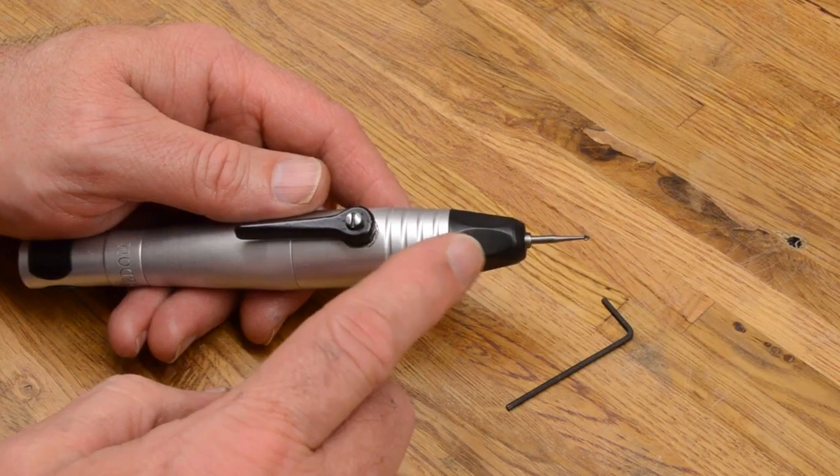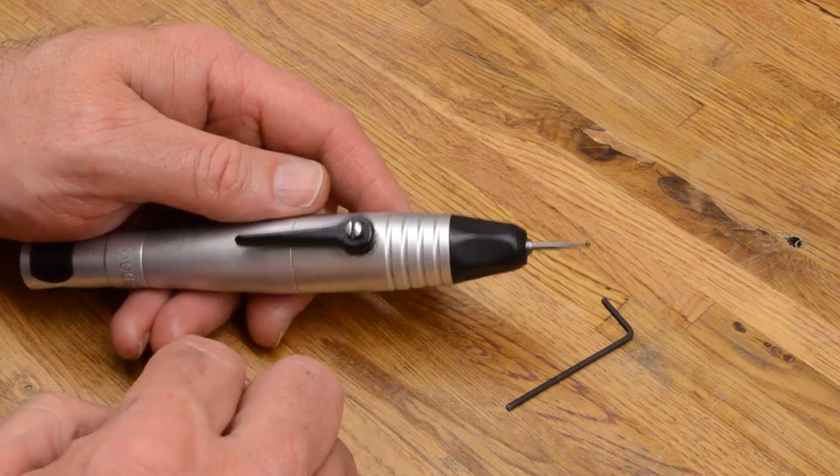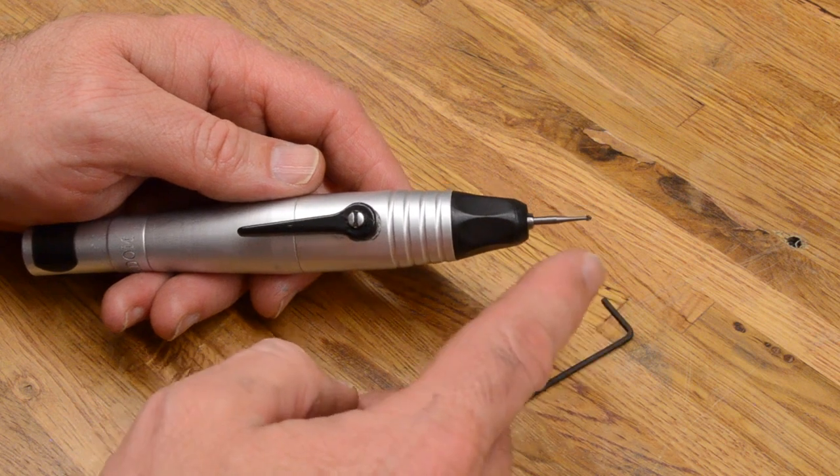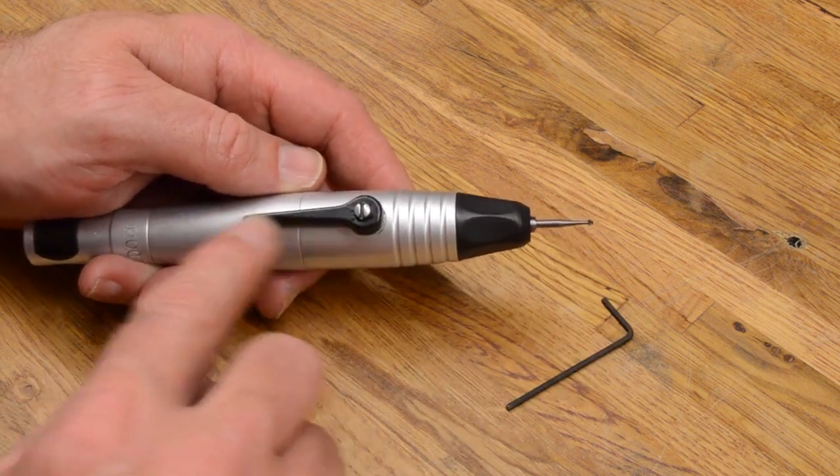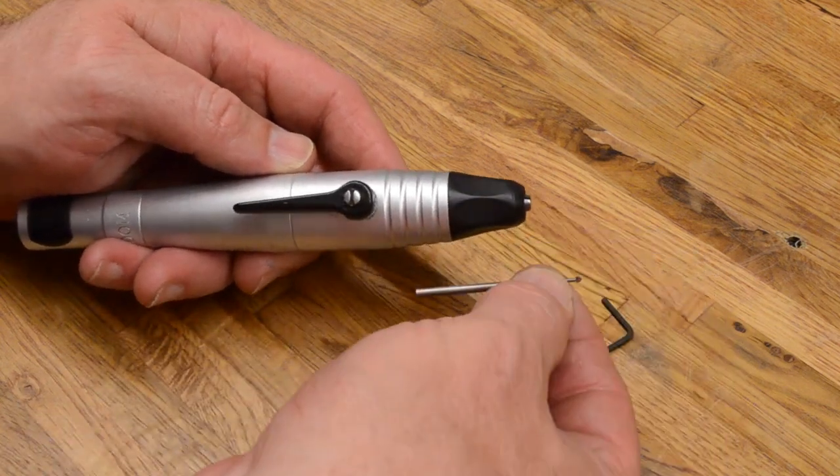There will come a time that you will need to adjust the collet in your H20 handpiece. You can see I've got a burr in this handpiece. It is in the lock, my lever is in the locked position, but the burr will slide right out.